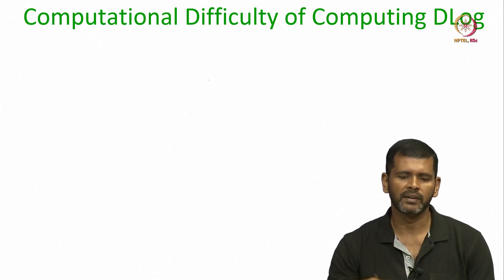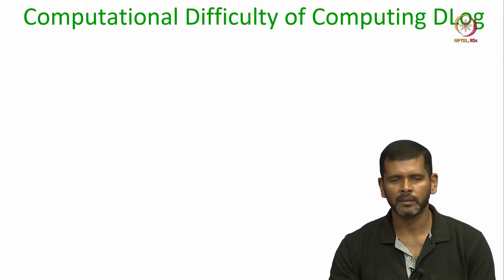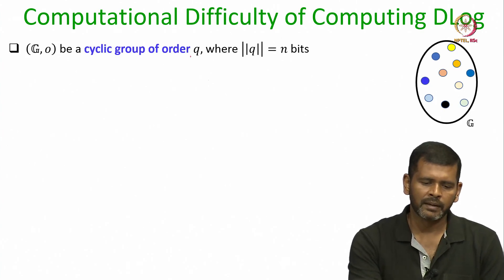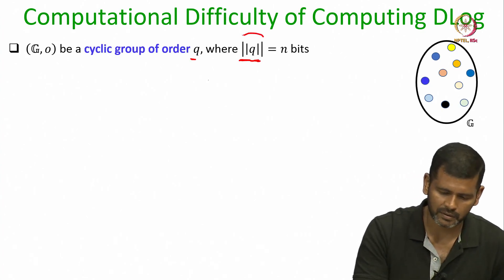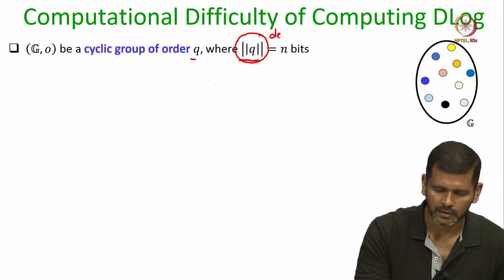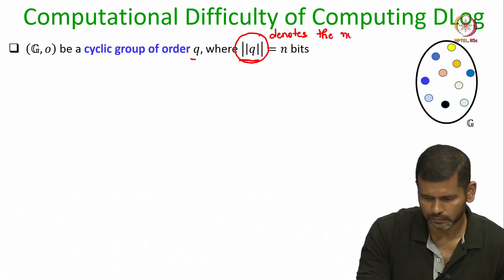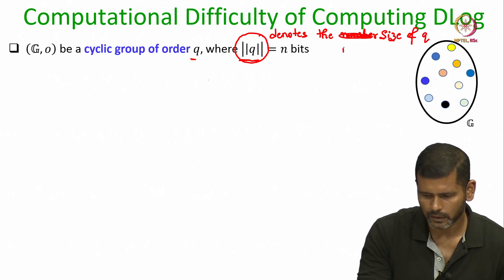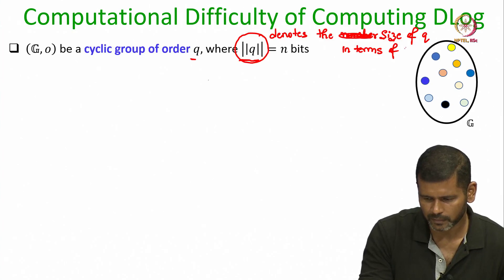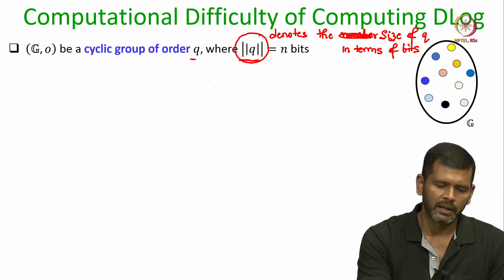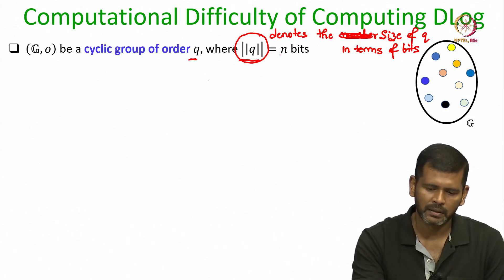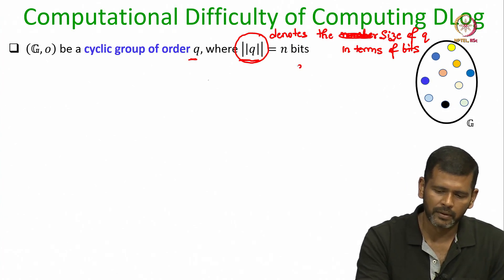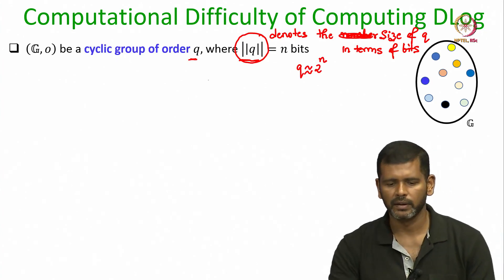Now, how difficult or easy is it to compute the discrete log of an arbitrary given element? Imagine a cyclic group whose order q is an n-bit number. This means q is roughly 2^n — the group size is exponentially large. Given a generator and a random element from the group, we want to compute the discrete logarithm of that element.